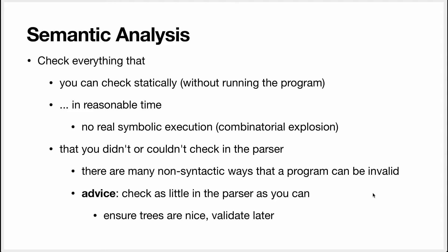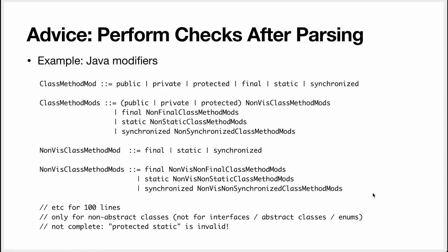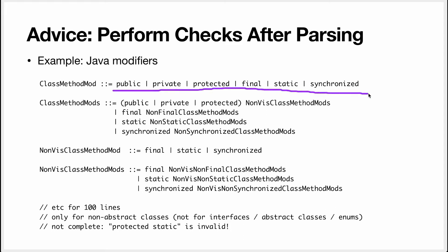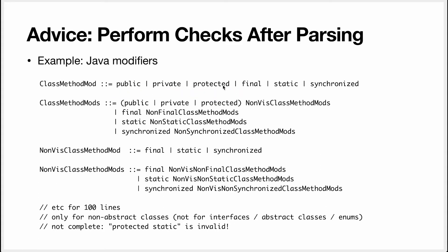You'll also be able to do checks that are more involved. For example, here is something you can check in a grammar but shouldn't, because it's horrible — that's the modifiers in Java. If you have a method in a class, it can have modifiers like public, private, protected, final, static, synchronized. There are constraints: a method can only have one visibility modifier — it cannot be public-private or public-public. Similarly, modifiers cannot be repeated; you cannot be static-static. You could encode this in a grammar — let me show how.